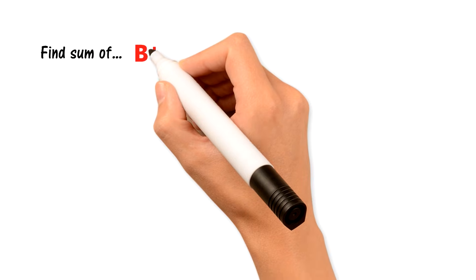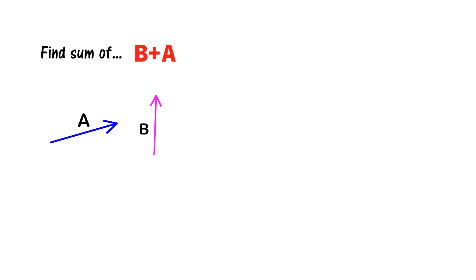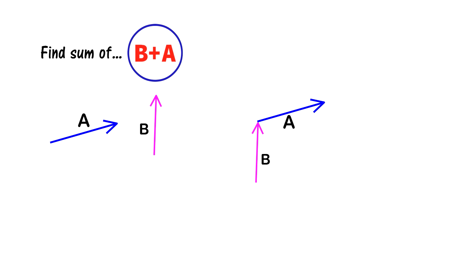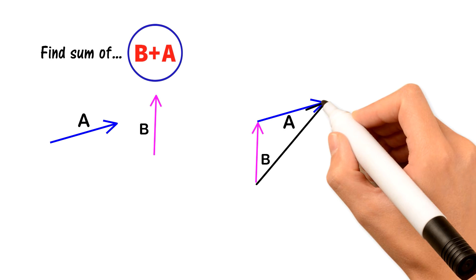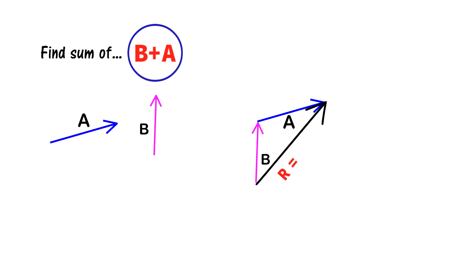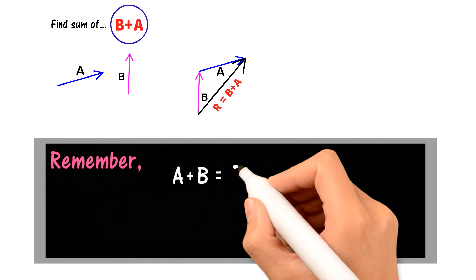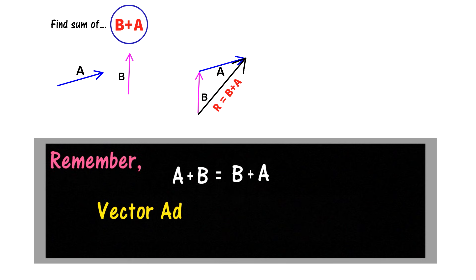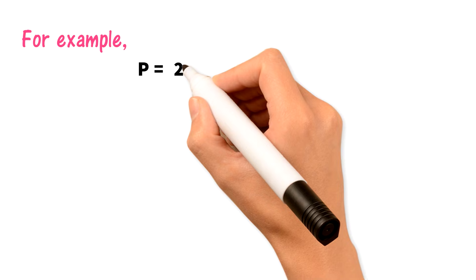Similarly, if someone asks me to find b plus a, I take vector b first, then vector a, joining the tail of vector a with the head of vector b. The resultant is found by joining the tail of vector b with the head of vector a, giving b plus a. Notice that a plus b equals b plus a — vector addition is commutative.